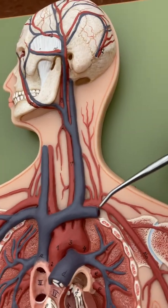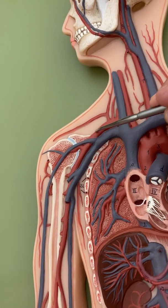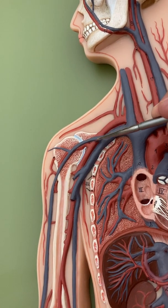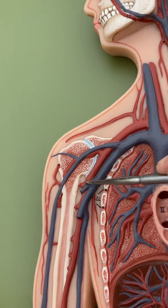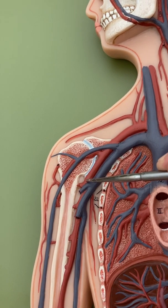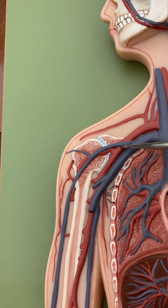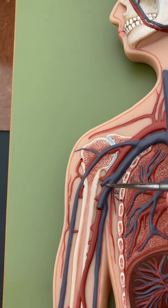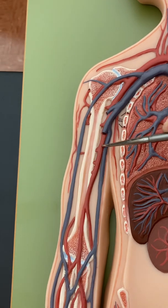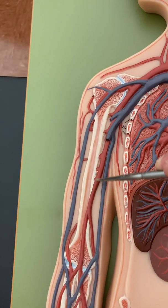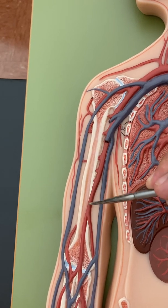Now let's go to the arm. Once we have the subclavian going under the clavicle, as soon as it gets to the armpit area — remember the term for armpit is axillary — we have the axillary artery, which is just a continuation of the subclavian. When it gets close to the humerus they call it the brachial artery. Just like roads, they sometimes change names but it's the same road.